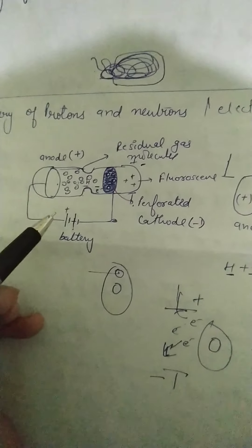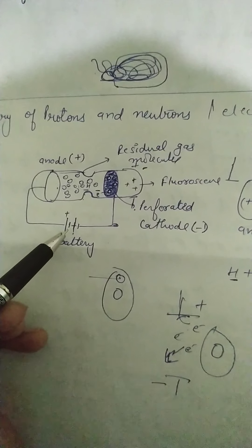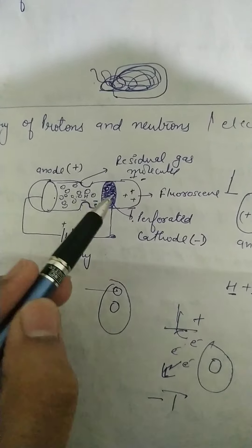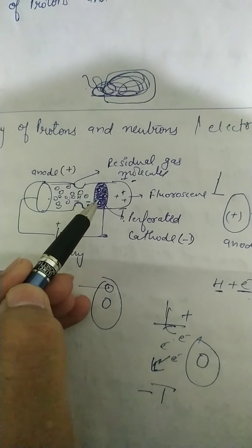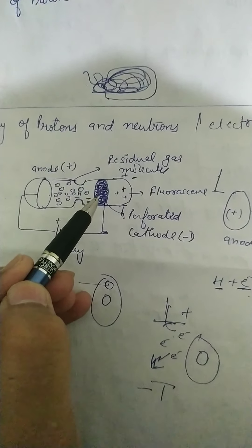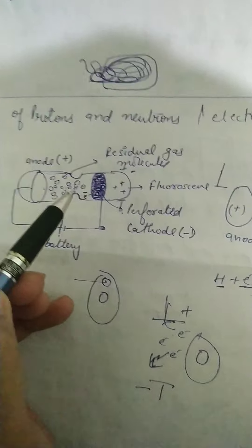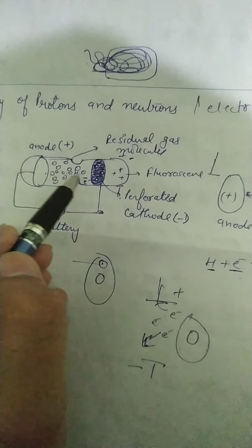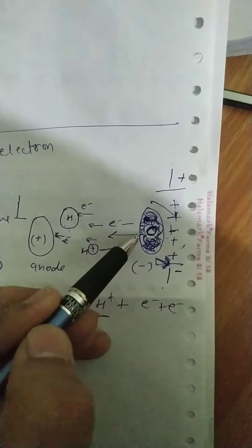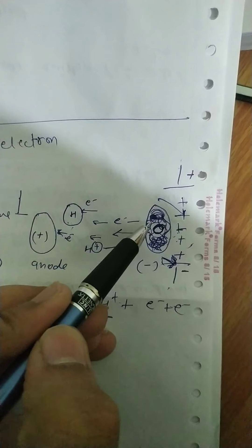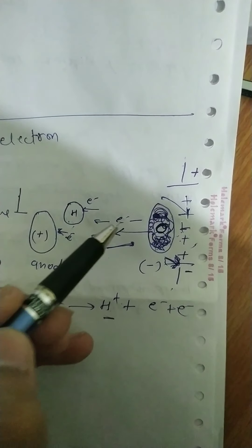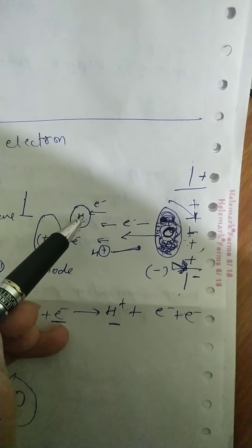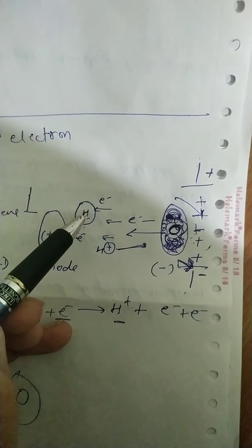So what happens when high voltage is applied across these electrodes — electrons are generated from the cathode. So I am going to explain the process which occurs in between these. When the cathode emits an electron, it collides with the hydrogen gas molecules. Suppose hydrogen gas is present there.